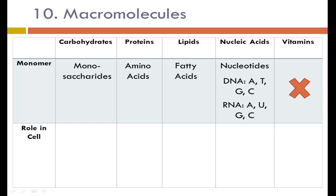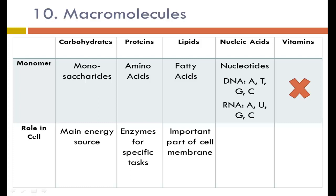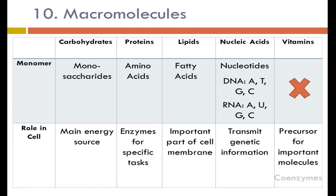The role of each macromolecule in the cell: carbohydrates are the main energy source — through cellular respiration, sugars are broken down to release energy and generate ATP. Proteins, including many enzymes, perform very specific tasks — there's a protein to let water into the cell, a protein to break down other proteins, and so on. Lipids are an important part of the cell membrane and can be used as long-term energy storage. Nucleic acids transmit genetic information. Vitamins are precursors for important molecules and coenzymes — for example, vitamin A is the precursor for retinol, which is important for eye health.